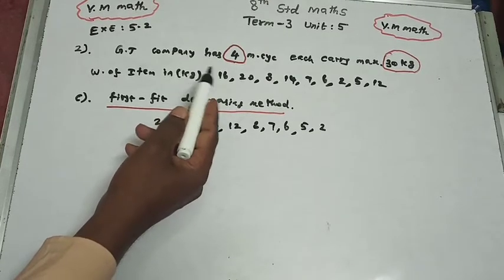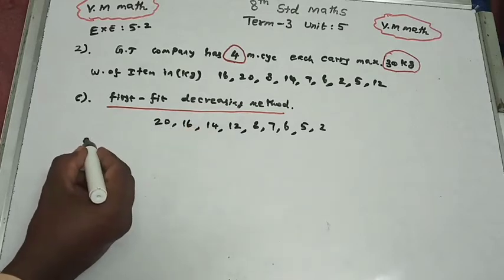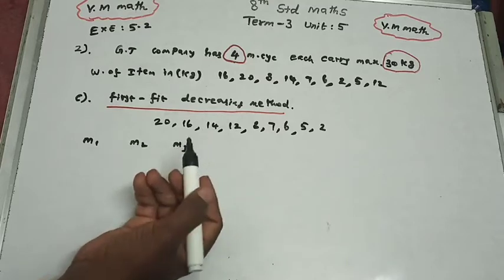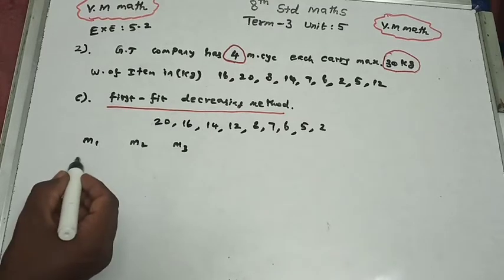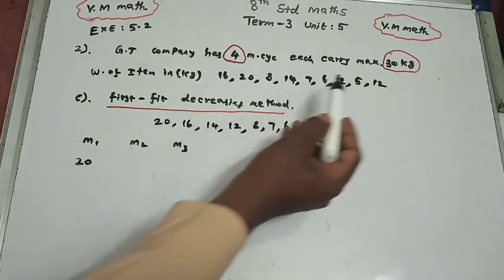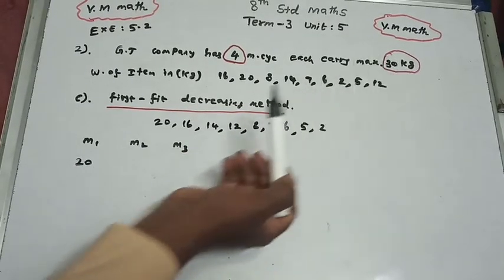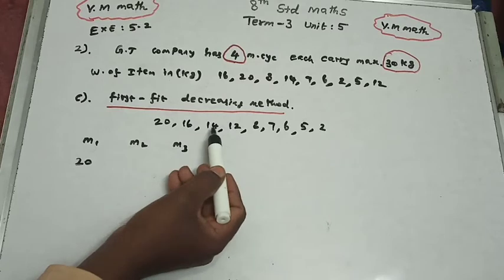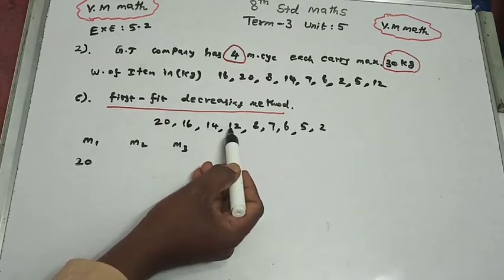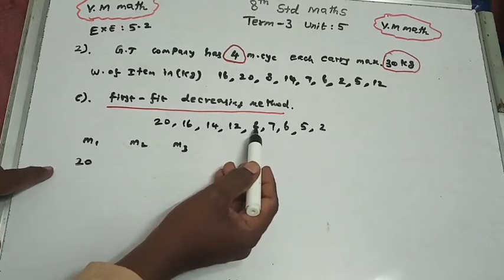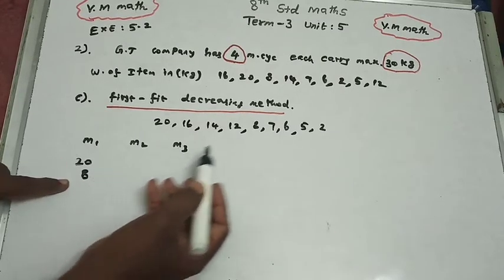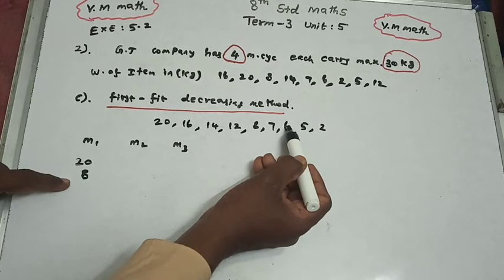Now we have 4 motorcycles: M1, M2, M3, M4. Fill up starting with the largest. First item is 20 kg into M1. One motorcycle maximum capacity is 30 kg. Next, try to fit 16: 20 + 16 = 36 — exceeds 30, so 16 goes to M2. Try 14: 20 + 14 = 34 — exceeds 30. Try 8: 20 + 8 = 28 kg, fits. Then try 6: 28 + 6 = 34 — exceeds 30. So M1 carries 28 kg.